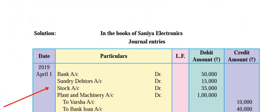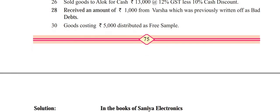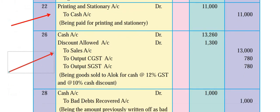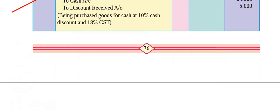28th April: received an amount of 1,000 from Varsha which was previously written off as bad debts - this is bad debts recovered. You know the rule: debit the expenses or losses, credit the incomes and gains. Bad debts recovered is income. Cash is coming in, so cash account debit 1,000, bad debts recovered account credit 1,000.